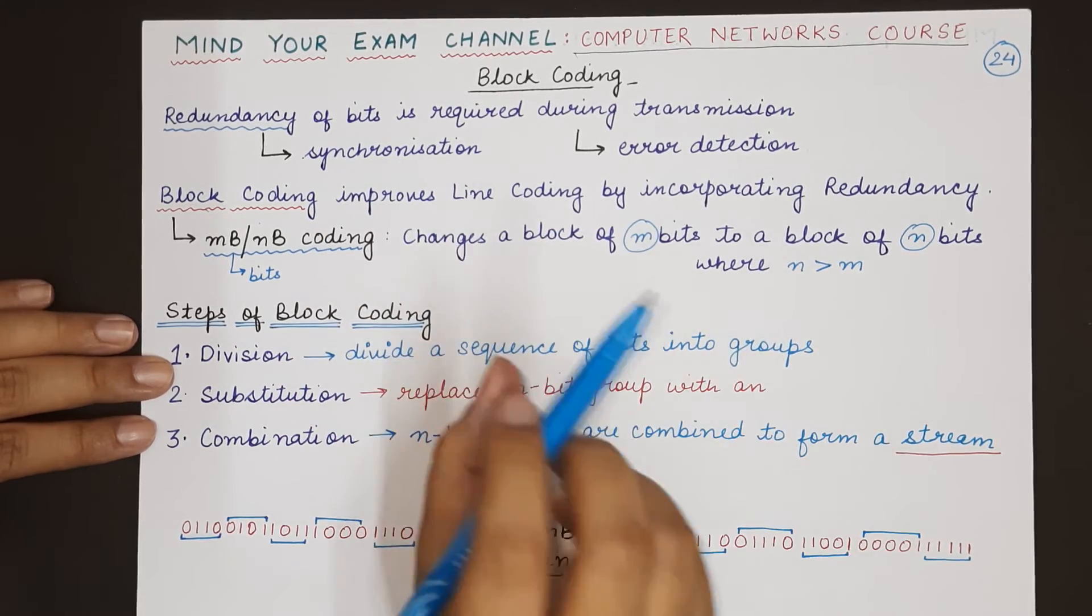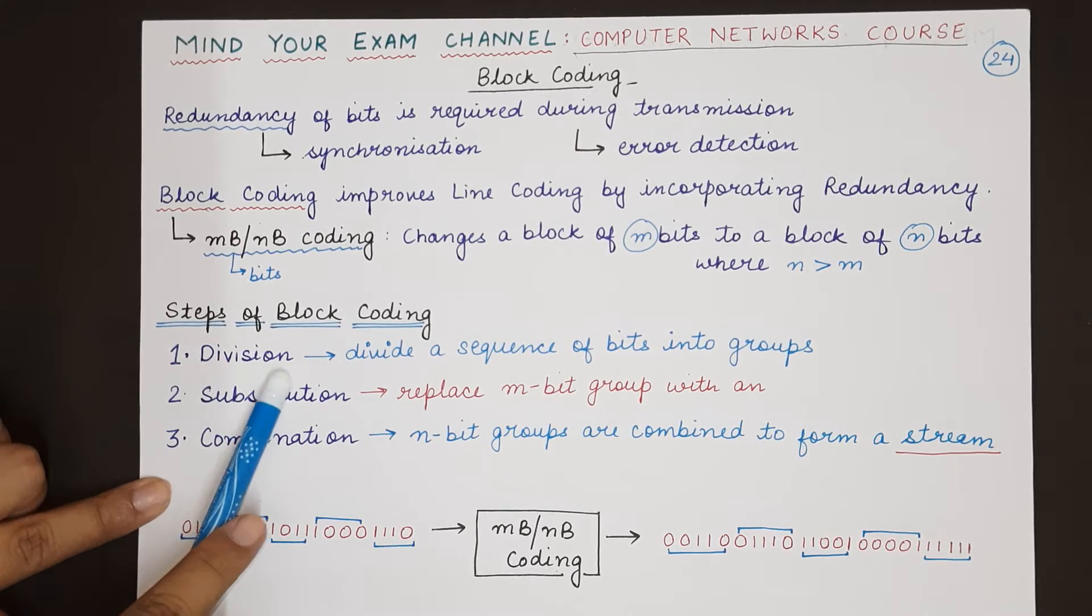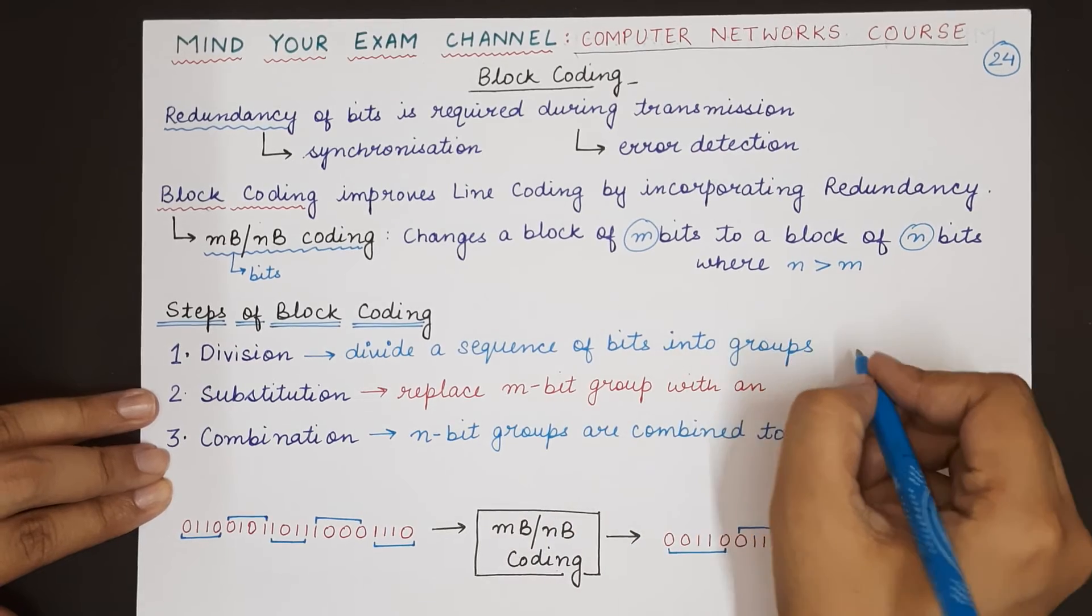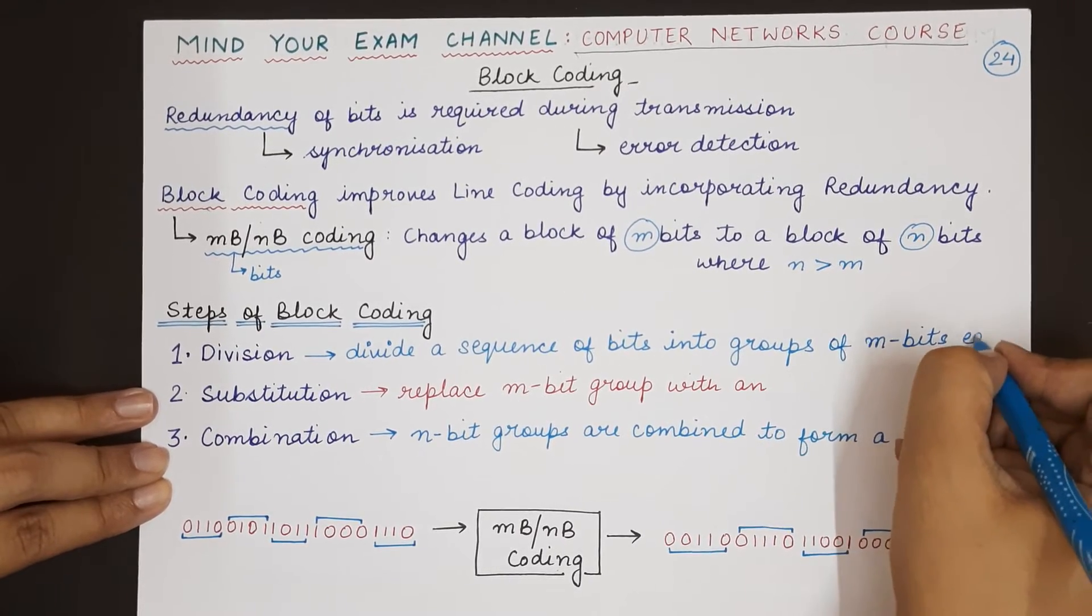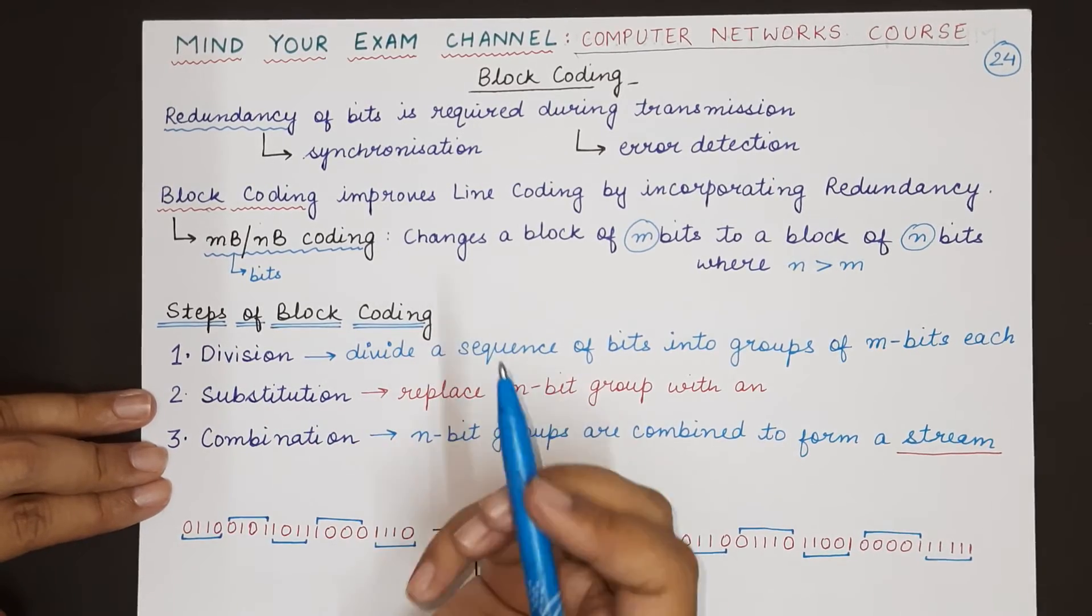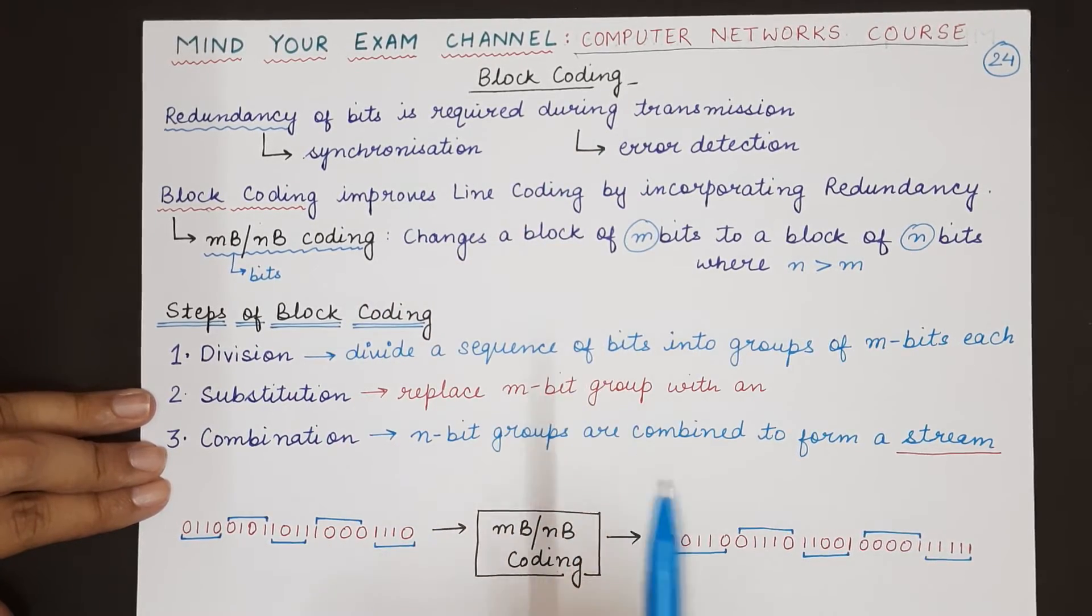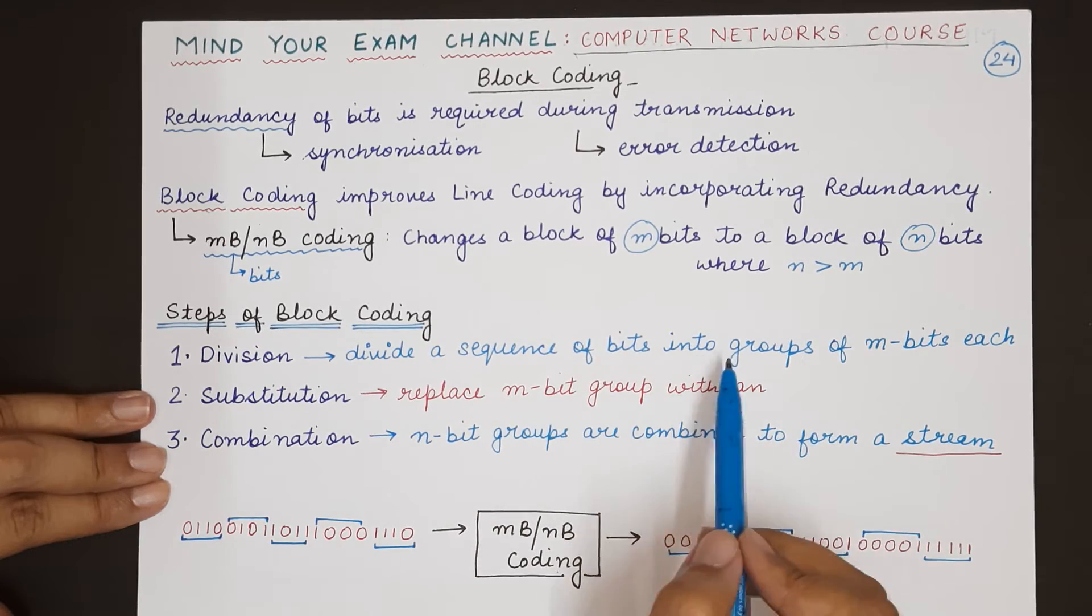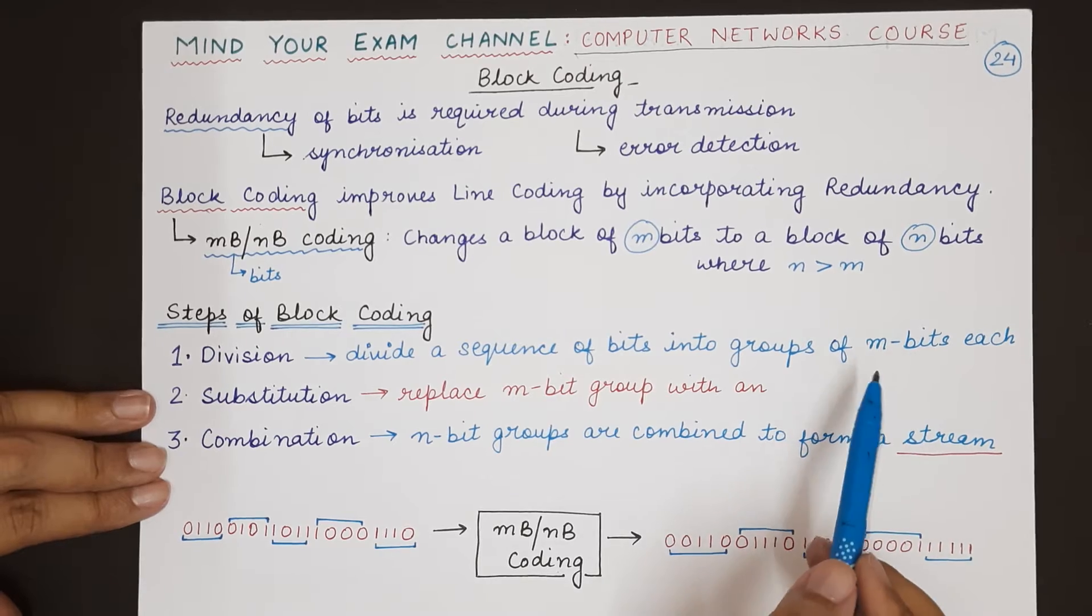Block coding basically involves three kinds of steps: division, substitution, and combination. As you can guess, division basically means dividing a sequence of bits into groups, and each group should be of m bits each. Here we are talking of mB/nB encoding, so m and n will be replaced according to the block coding scheme that we will be using. We will be studying two other types of block coding schemes in the next video. Today we will be understanding the concept and working of block coding.